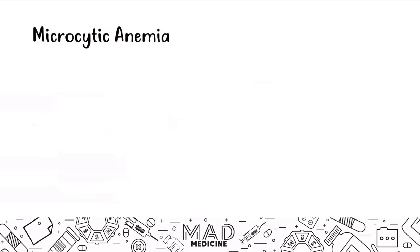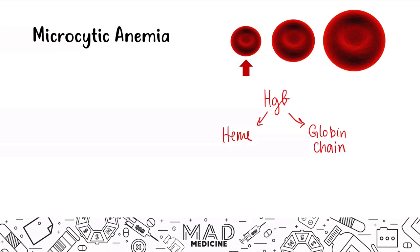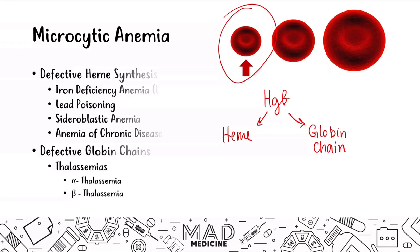In order to understand microcytic anemias, you have to understand that these are going to be caused by a defect in hemoglobin synthesis. Hemoglobin consists of heme groups, heme molecules, and globin chains — those are the two things that make up hemoglobin. If there's any defect in the production of the heme molecule or the globin chains, you are going to have a microcytic anemia. The two main causes are defective heme synthesis and defective globin chains, and today we are going to be focusing on the heme synthesis category — specifically sideroblastic anemia.